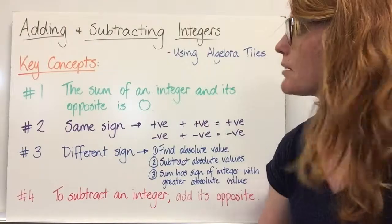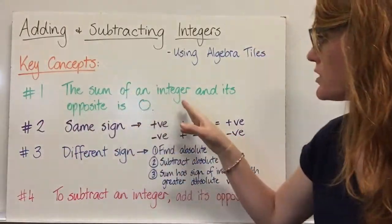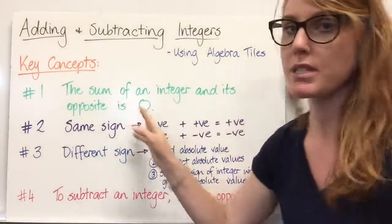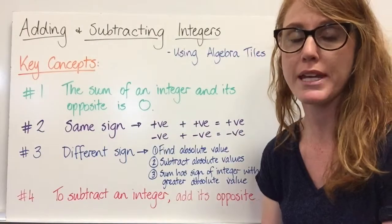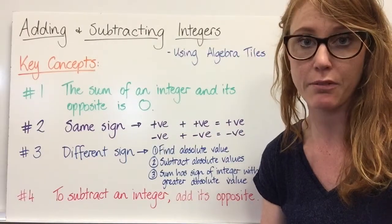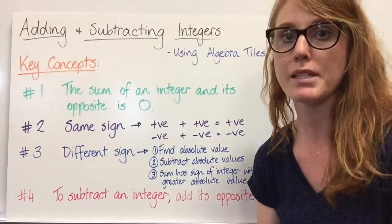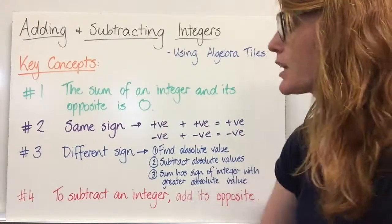Our key concepts to remember. Number one: the sum of an integer and its opposite is zero. For example, three and the opposite of three, which is negative three — three plus negative three equals zero.